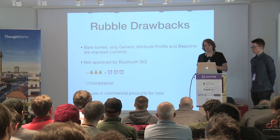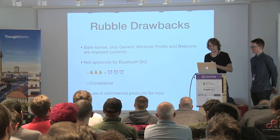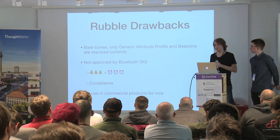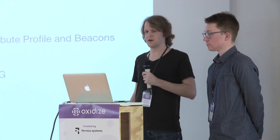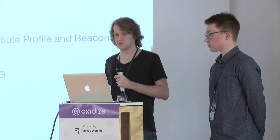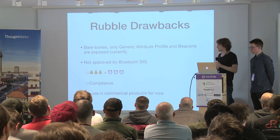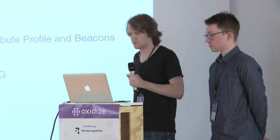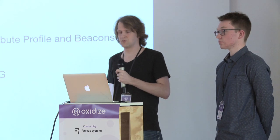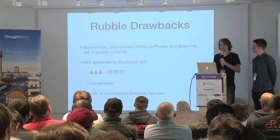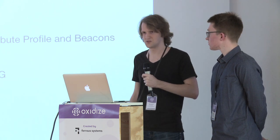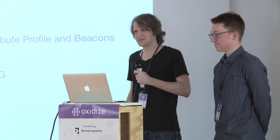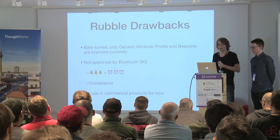Now we've talked about what Rubble does — let's talk about what it doesn't do. Right now it's very bare bones. We only have a generic attribute profile implemented in a really bare-bones way, and we have beacons running — you can scan for beacons. It's not approved by the SIG because that takes a lot of time and money, and we might not be completely compliant yet because it's 3,000 pages and just two people working on it. Right now there's no use in commercial products.